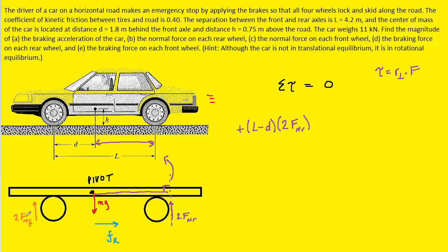For the two front normal forces, extending the line through that force and measuring the perpendicular distance to the pivot gives simply the distance d. So we have d times 2Fnf. Pushing up on the front of the car would cause counterclockwise rotation — wait, that is actually a negative torque. For the frictional force, the perpendicular distance to the pivot is the height h, giving h times Fk.